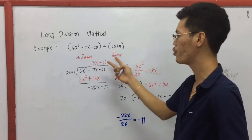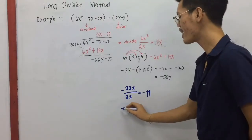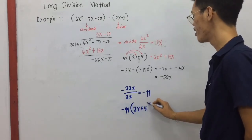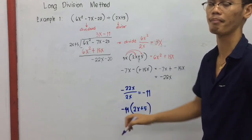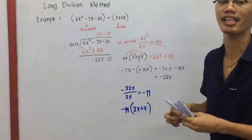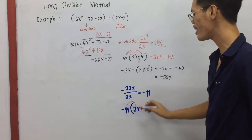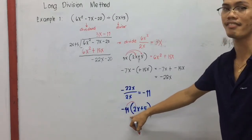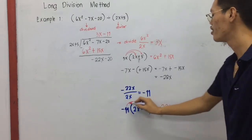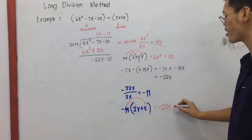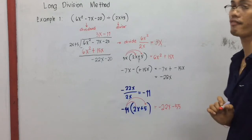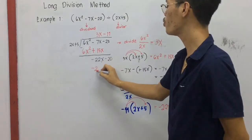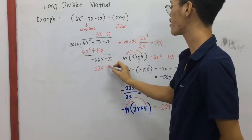After division, we multiply. Negative 11, multiply it by the divisor 2x plus 5. We distribute negative 11 to each term: negative 11 times 2x equals negative 22x, and negative 11 times positive 5 equals negative 55. So the product is negative 22x minus 55, which we place below.